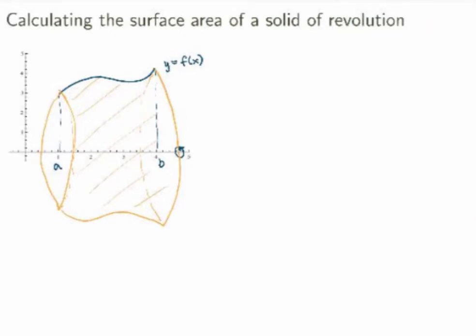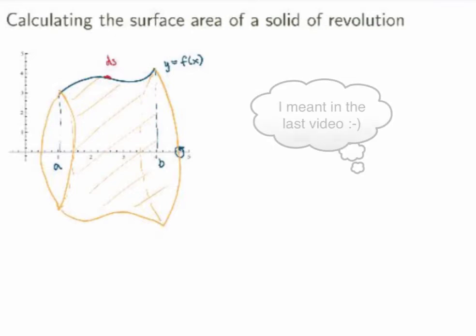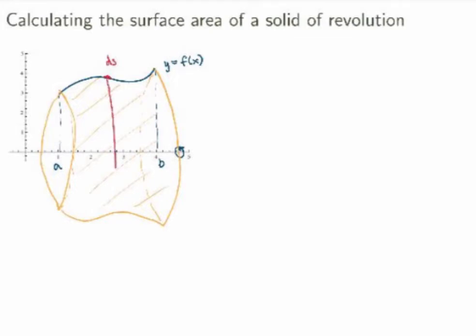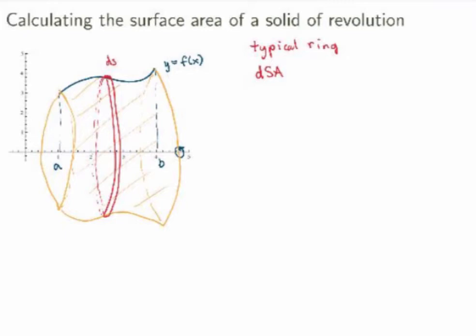The idea is the same as always: I want to slice the problem into manageable slices, calculate the area of each slice, and then sum them up to get the total surface area. So I'll look at a small segment of the curve of length ds, where ds is the line element we introduced when we studied arc length of curves. I rotate that about the axis to get a little ring. These rings are my slices. I calculate the area of a typical ring — call it dSA for surface area — and then add them up to get the total surface area.